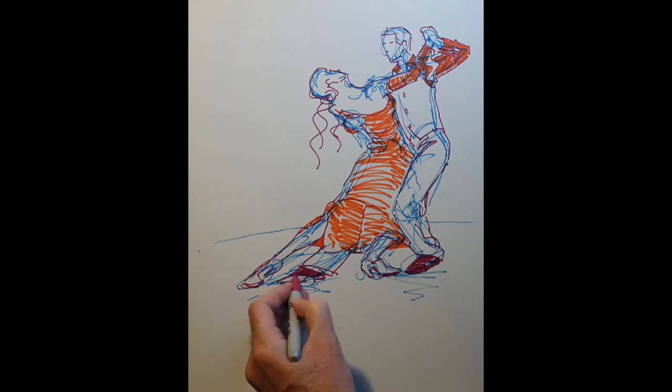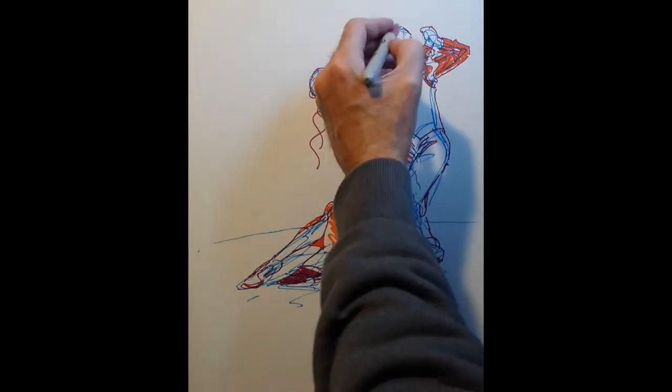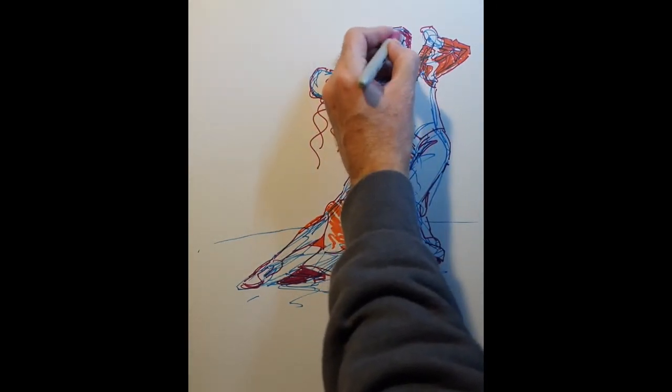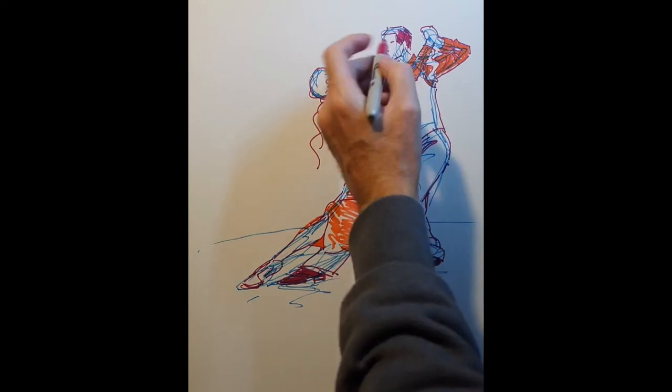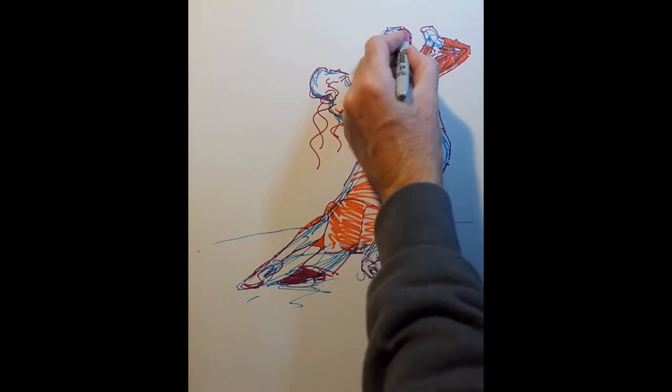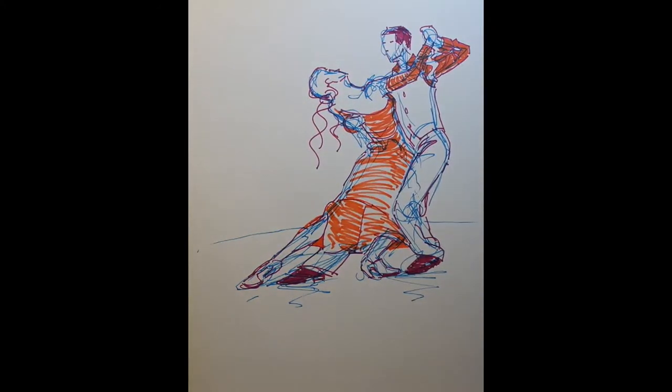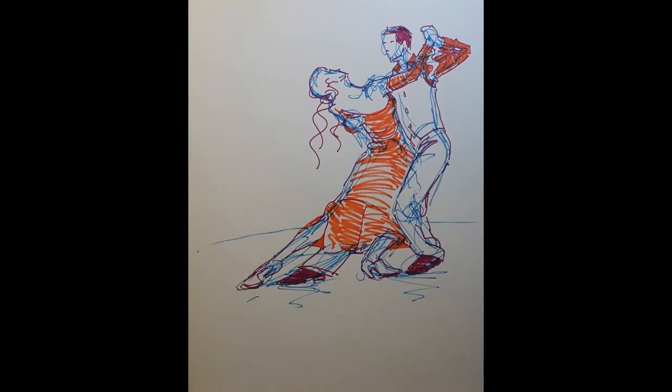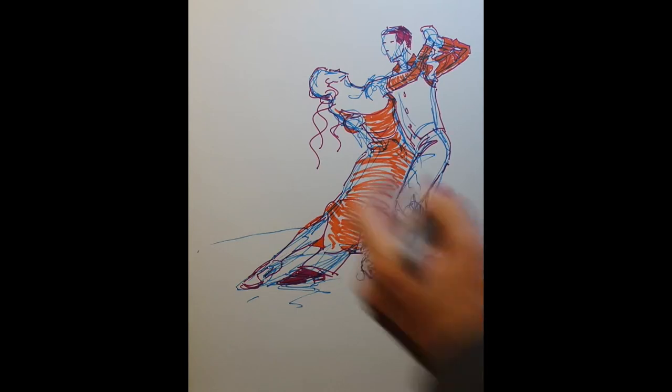So the other thing you could do with the Wheel of Fortune is, rather than just pick out colours, you could pick out different media combinations. So you could put on watercolour, acrylic, inktense blocks, coloured pencils, biro, marker pens, sharpie markers, charcoal, all sorts of different things. And then you could come up with a media combination, see how that goes. But back to our drawing, you can see it's starting to take shape now.